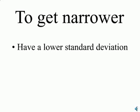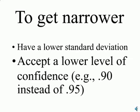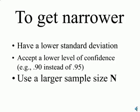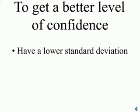To get a narrower margin of error and a narrower confidence interval, we could do this in three ways. If we had a lower standard deviation that would help, but that's not likely to be within our power of control. A second possibility is to accept a lower level of confidence — perhaps a 90% level instead of a 95% level. Perhaps the best solution is to get a larger sample size.